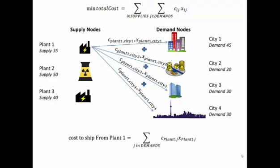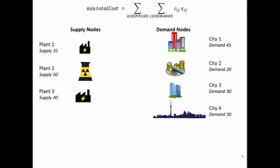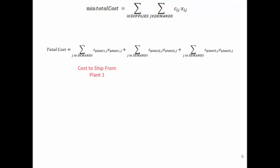If we were to write just the component calculating those costs, the cost to ship from plant one is the sum over all the different demand points of C for plant one to demand point j times x of plant one to demand point j. Then we would add to that all the shipping costs from plant two, which would have a similar summation just for plant two. And then we'd also add the shipping costs for plant three. So we have a sum of sums.